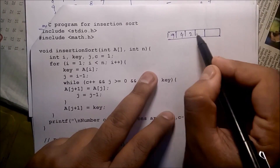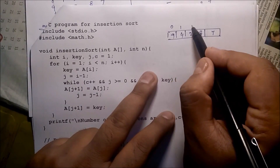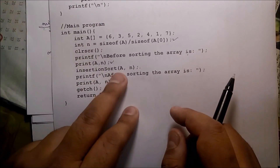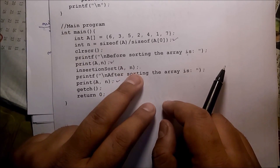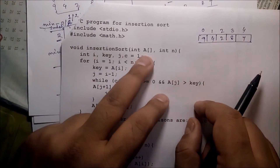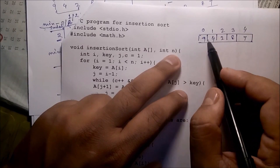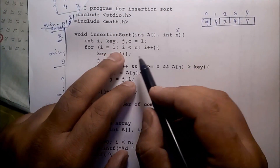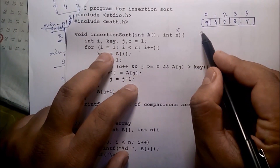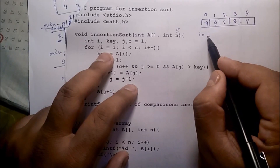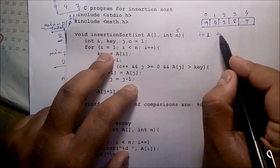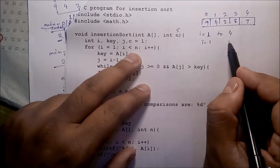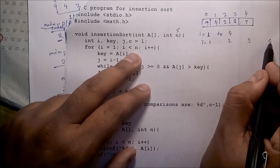Suppose the array is 9, 4, 2, 0, 1. We pass the array name and size of the array. We receive the array name and size — total 5 elements. i is equal to 1, and goes up to less than n (which is 5), so i will be 1, then 2, then 3, then 4.